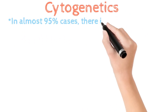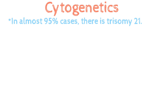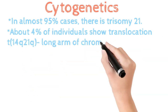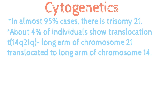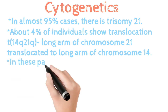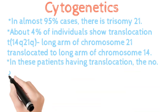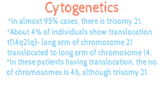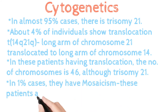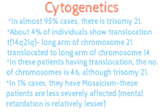Next, cytogenetics. In almost 95% of cases, it is Trisomy 21 — that is, an extra chromosome at the 21st chromosome. In 4% of cases, it shows translocation, where the long arm of chromosome 21 is translocated to chromosome 14. In these cases, the number of chromosomes is 46 only, though there is still Trisomy 21. In 1% of cases, mosaicism is seen, and these patients are less severely affected.